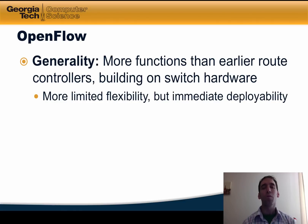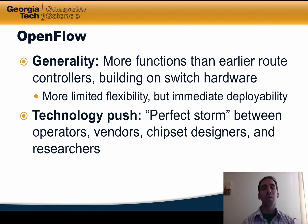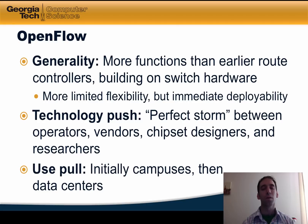OpenFlow took a much more general approach, providing more functions than earlier route controllers and building on existing switch hardware support. Relying on existing switch hardware limited flexibility somewhat, but offered a huge win in immediate deployability. In some sense, OpenFlow was pushed by a perfect storm between network operators who faced real network management problems, vendors eager to unseat incumbent vendors, chipset designers who had begun to open their APIs, and researchers looking for new ways to innovate in the network. OpenFlow was initially adopted in campuses and then in data centers, and now we're seeing many more deployments in a variety of different networks.